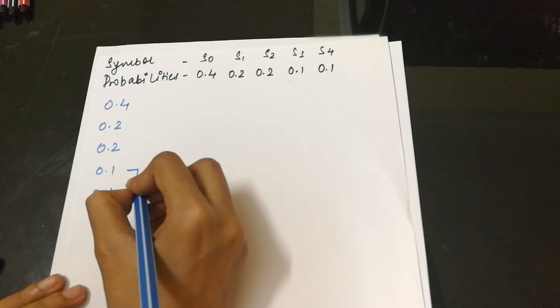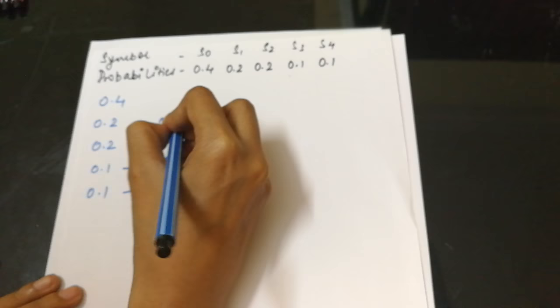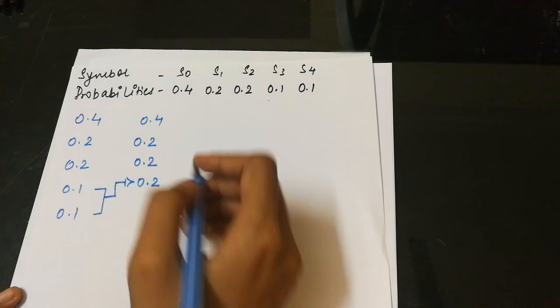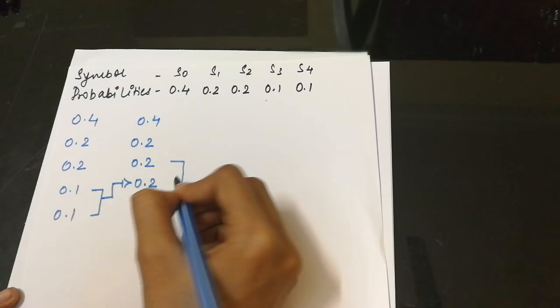Now these two probabilities will yield 0.4, which is greater than 0.2, we write it here, and these are written as it is.